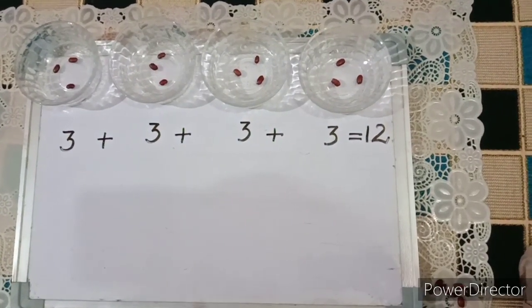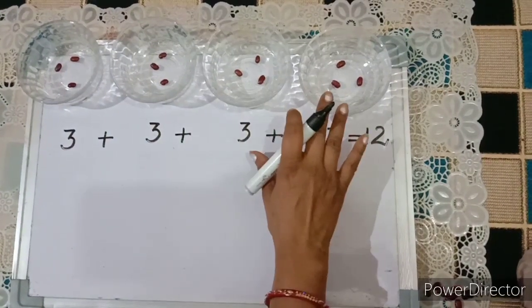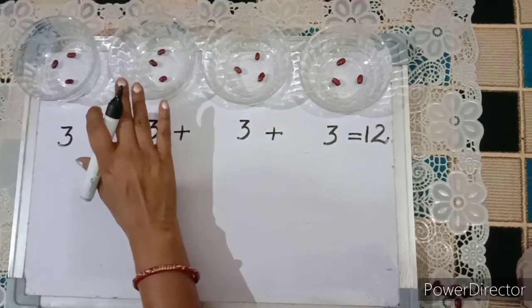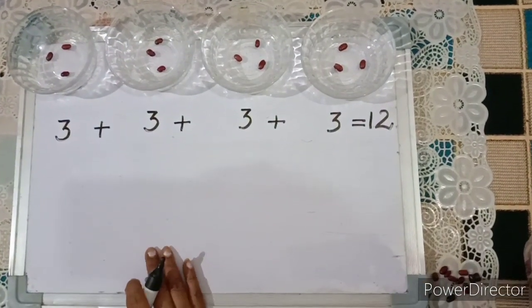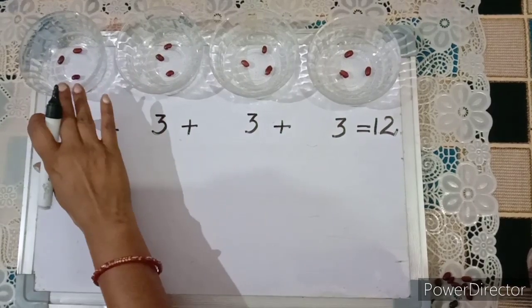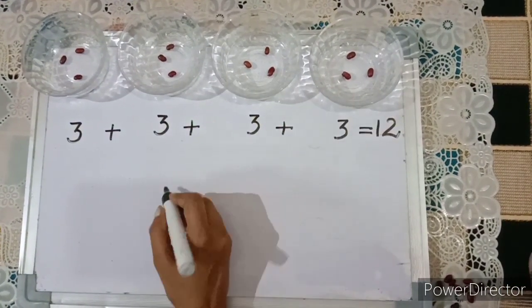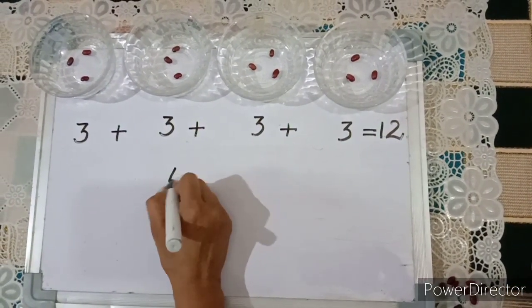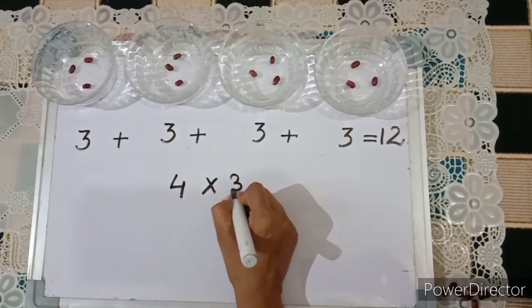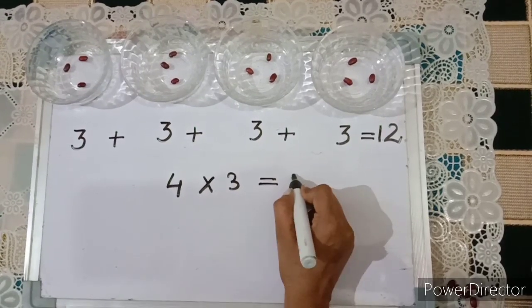So how many bowls are there? There are 4 bowls, and in each bowl there are 3 beans. So how we will write: 4 times 3 — 1 time, 2 times, 3 times, 4 times. So here we will write 4 into 3, and 4 into 3 is equals to 12.